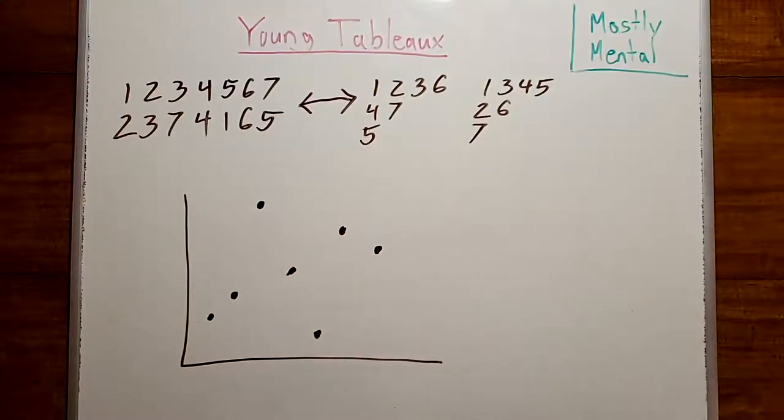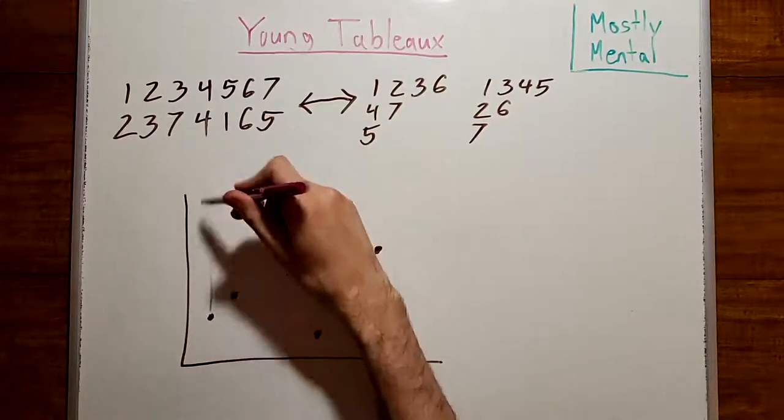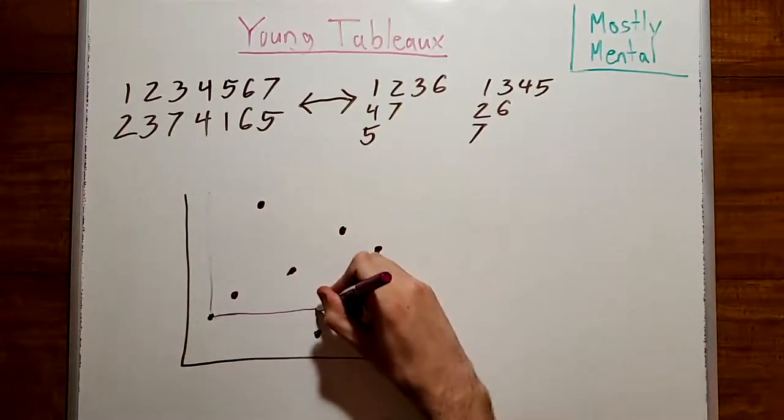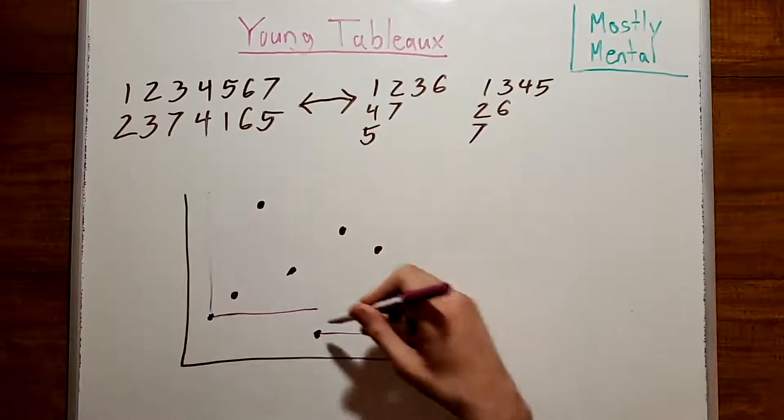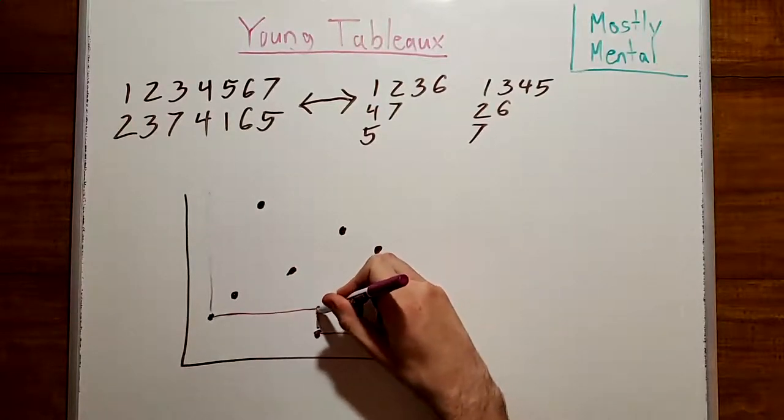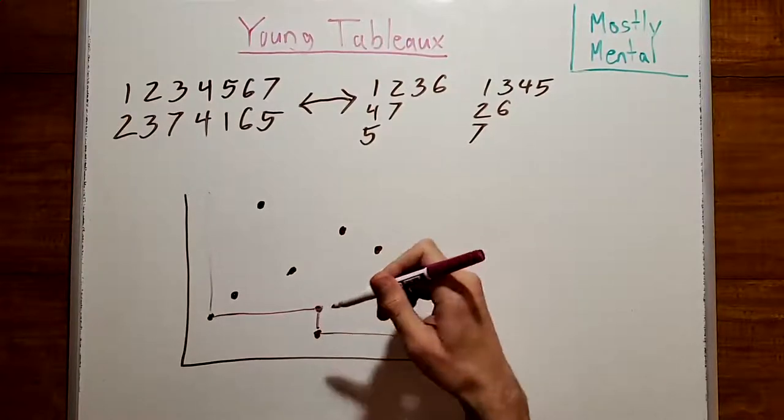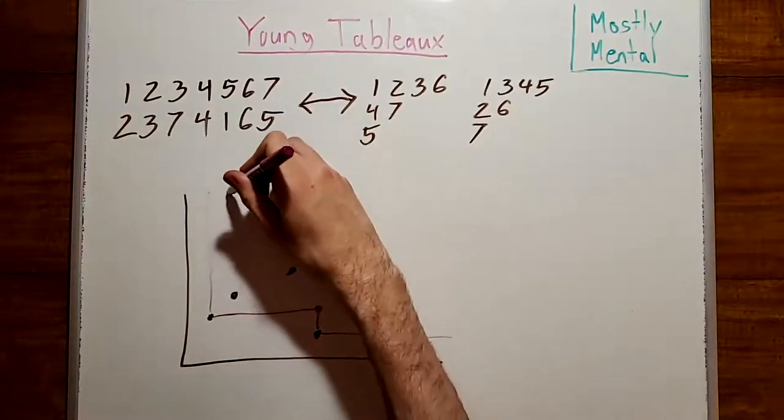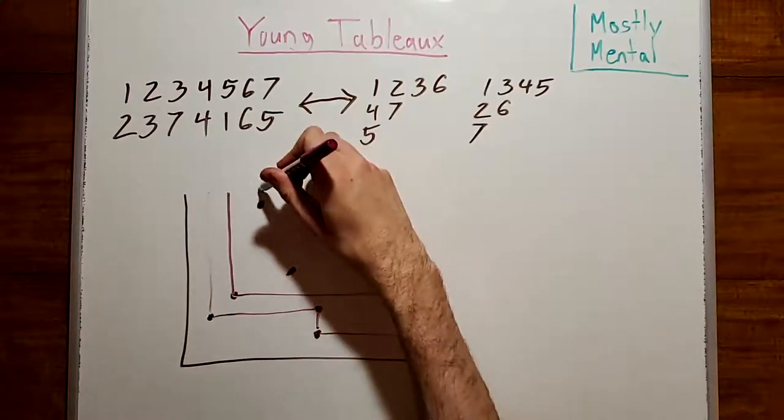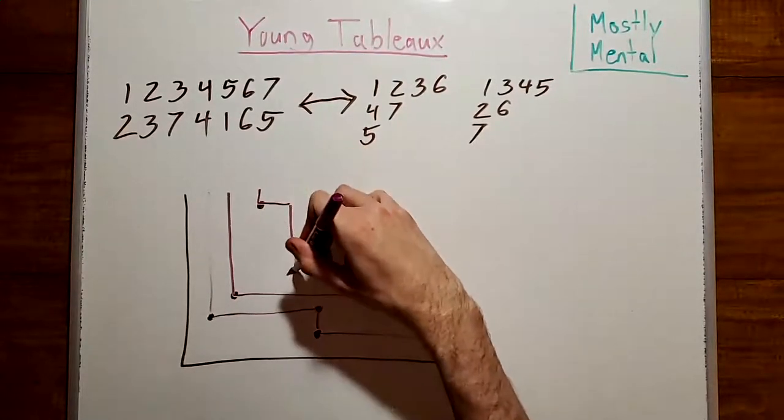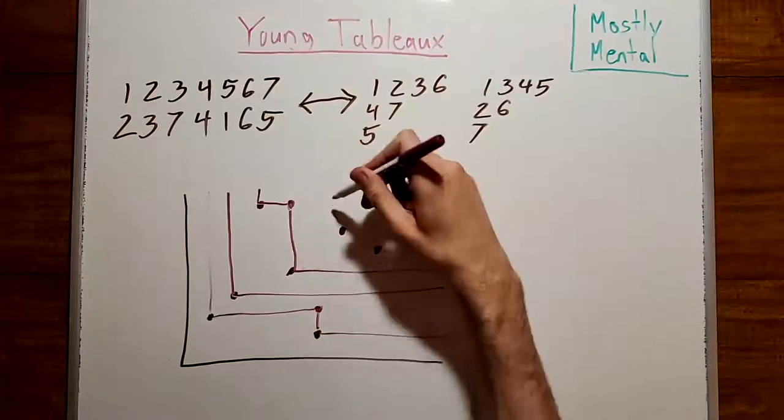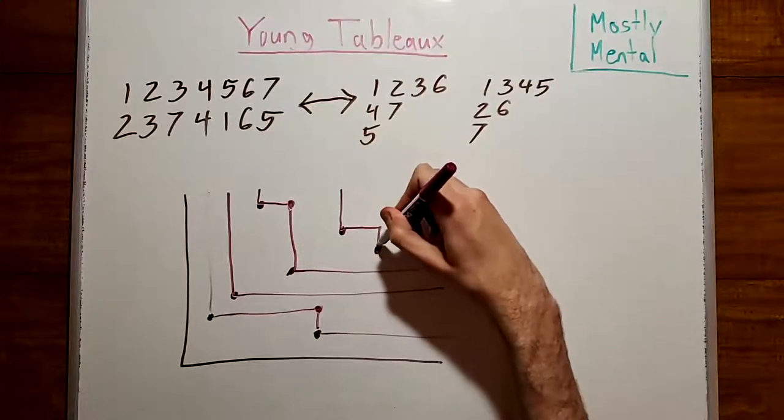Next, we'll draw lines starting at each of these points, going upward and to the right. And notice that some of these lines are going to intersect. We'll cut those lines off at the first intersection point. And continuing this, these two will intersect, so we'll cut them off. And these two will intersect.